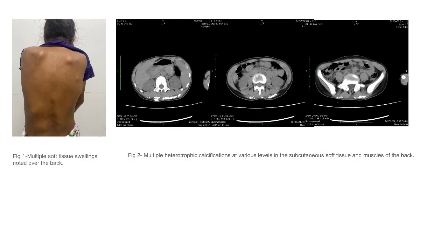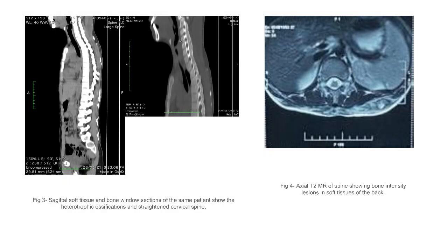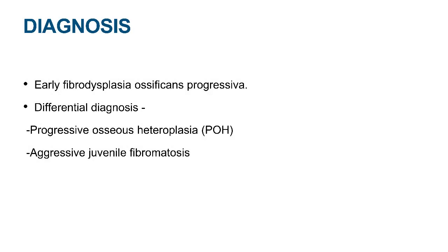MRI of the patient revealed ill-defined bone intensity lesions within the subcutaneous plane, predominantly in the lower back region. The clinical image shows multiple soft tissue swellings over the back. CT images show multiple heterotopic calcified lesions in the soft tissues of the back, more predominant in the lower part, involving the muscles and soft tissues. Sagittal sections show soft tissue ossification and straightening of the cervical spine due to osseous bridging of the transverse processes. The T2 MRI shows bone intensity lesions in the soft tissues of the back.